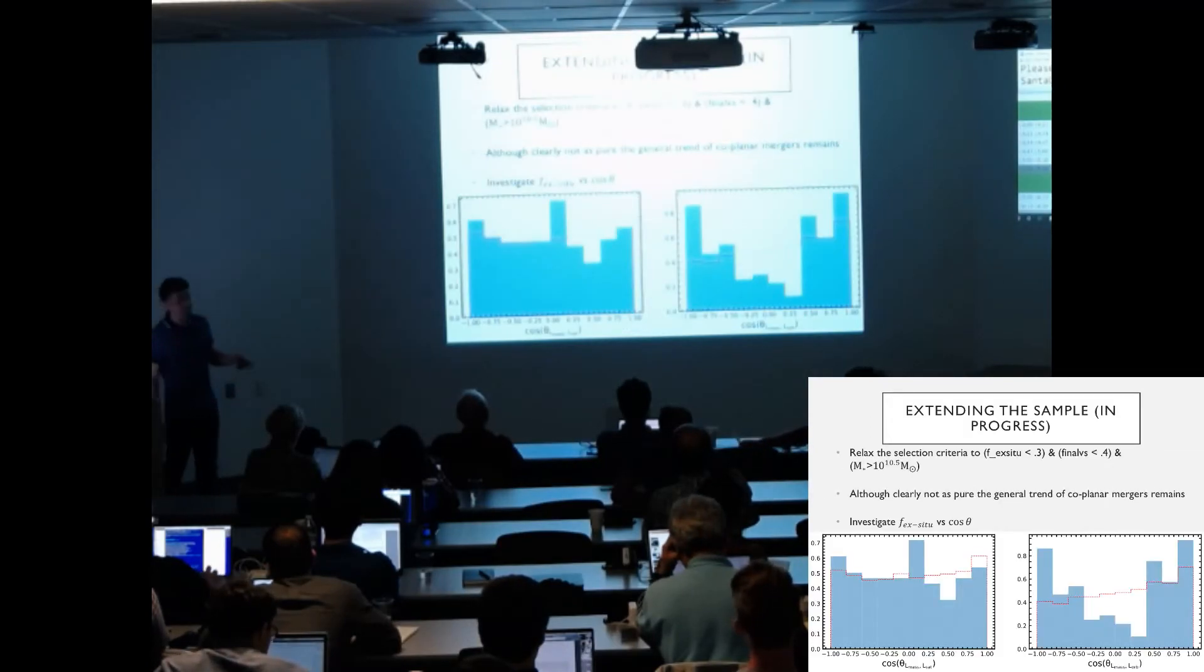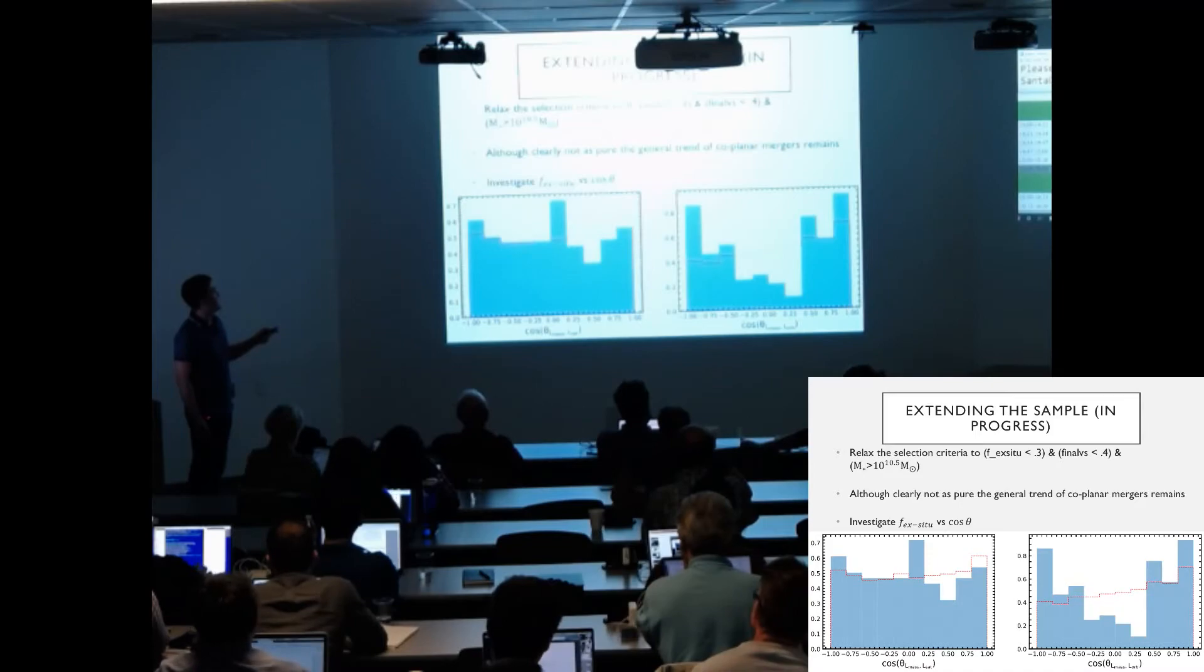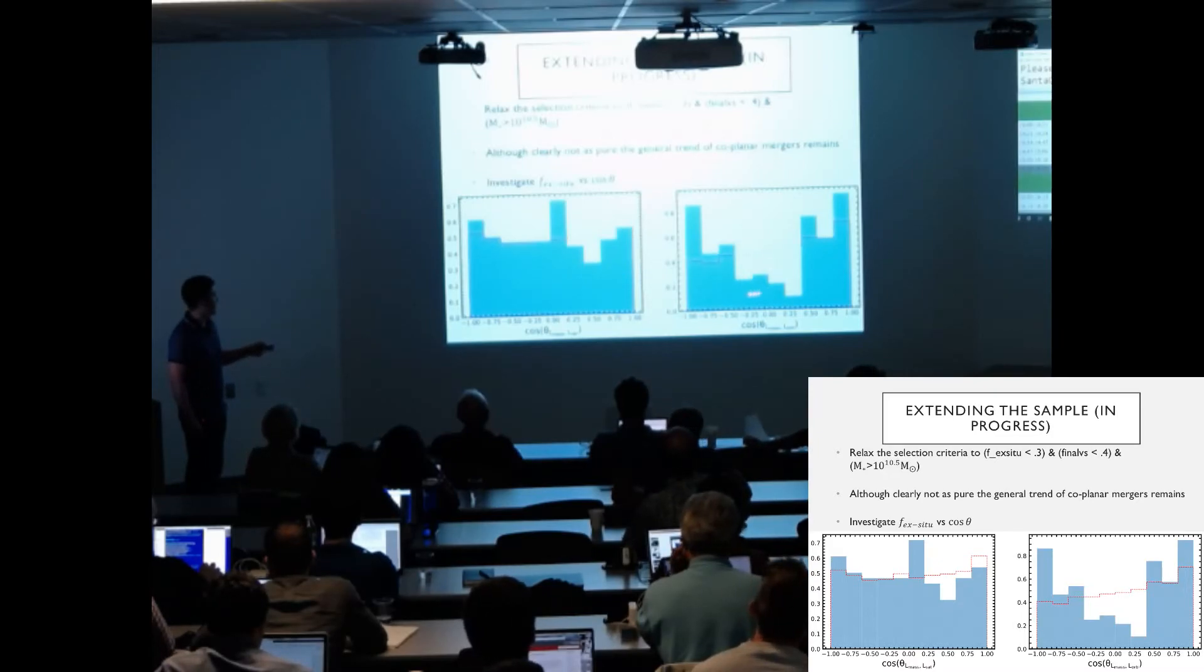So this sample is very small. So I've decided to extend the sample out by reducing the selection criteria. I've increased the final V over sigma to 0.4 and reduced the mass slightly, and this is the graphs that are produced. Now you can see that it's not as pure. We now have galaxies filling in the central bit here. But still, the preference is for co-planar mergers.